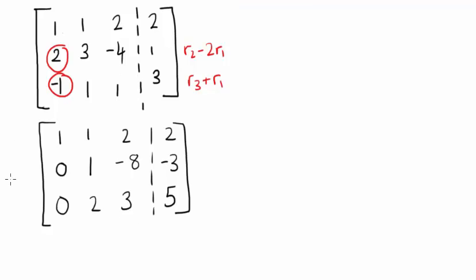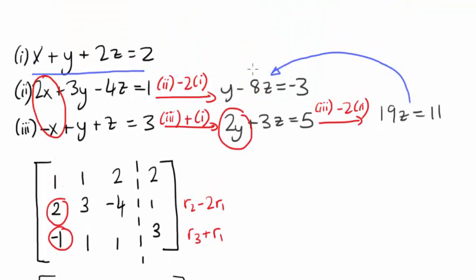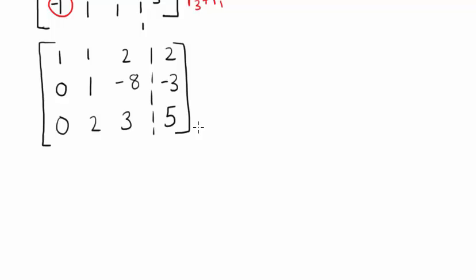Notice that these equations are the same as the ones that we arrived at above. We have y minus 8z equals minus 3. And we have 2y plus 3z equals 5.